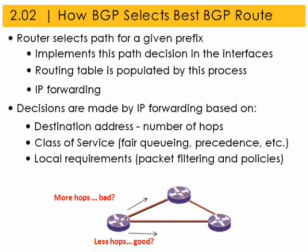Since BGP is a path vector protocol, it is capable of handling large routing tables. Currently, the full routing table has over 318,000 routes. Most BGP routers do not need to load the entire routing table. BGP advertises a route once. After the route is advertised, BGP only updates neighbors about changes.